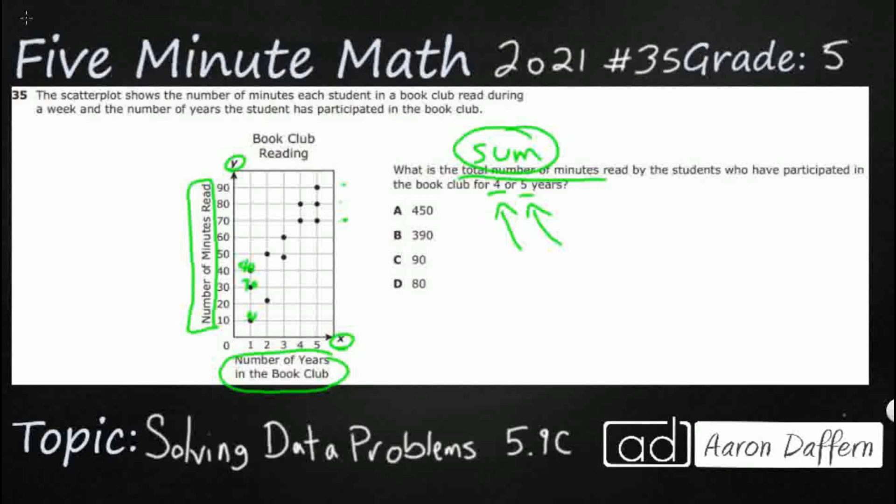We need 4 years or 5 years. So we're going to take everything that we can find off 4 or 5, and that's going to be right here. So really, unfortunately, we don't need any of this data. I'm just going to X this out. We don't need any of that right here.